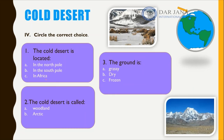Let's circle the correct choice for each question. The cold desert is located in the north pole, the south pole, or Africa — looking at the picture, the arrow points to the arctic, so it is found in the north pole. The cold desert is called the arctic. The ground is frozen because it is extremely cold.